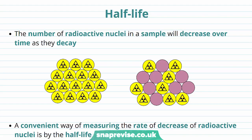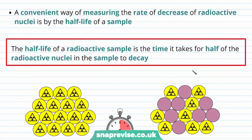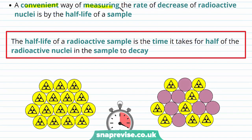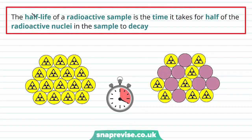The half-life is a useful property of a radioactive source. We know that the number of radioactive nuclei in a sample will decrease over time as they decay. Radioactive nuclei will decay and become stable, and this means that the number of radioactive nuclei in a sample will decrease. The half-life of a radioactive sample is the time it takes for half of the radioactive nuclei in the sample to decay.